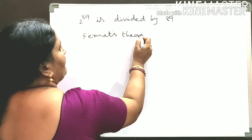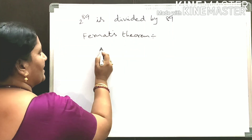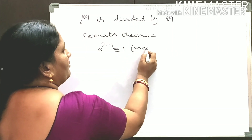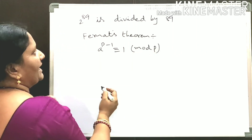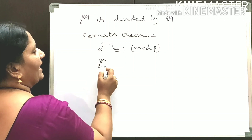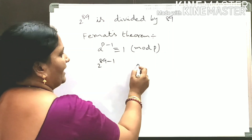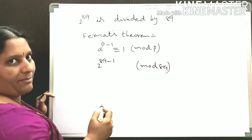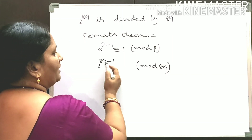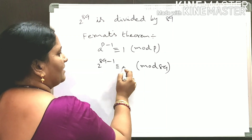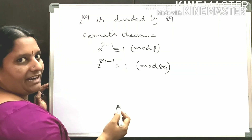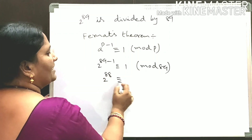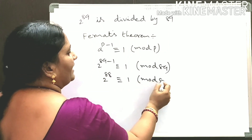Fermat's theorem states that a to the power of p minus 1 is congruent to 1 modulo p. So let us take 2 to the power of 89 minus 1, modulo 89. Since 89 is a prime number, we get 2 to the power of 88 is congruent to 1 modulo 89.